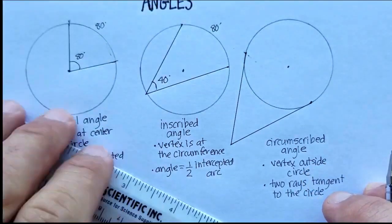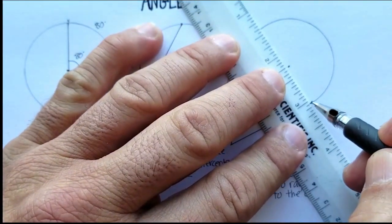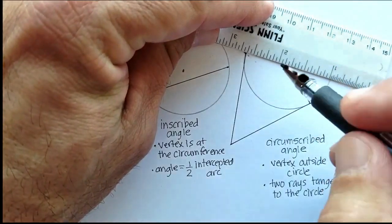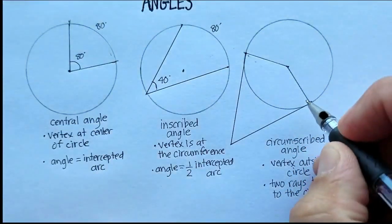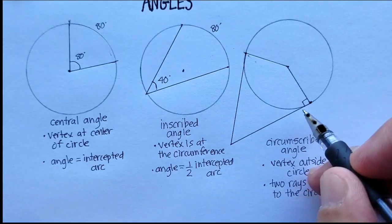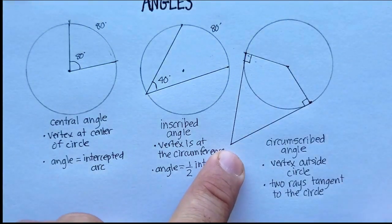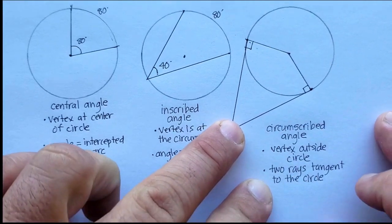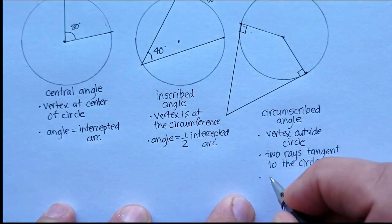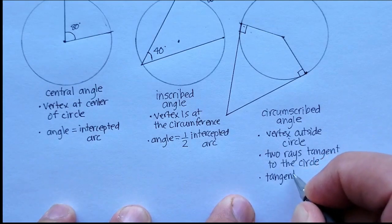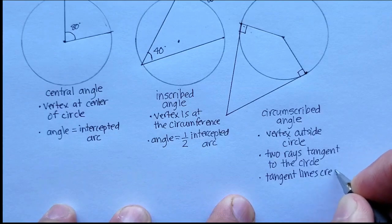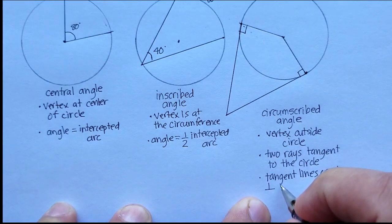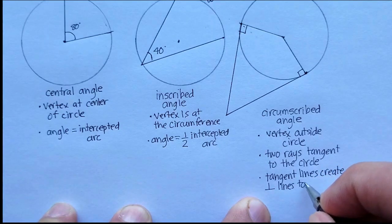The cool thing about tangent lines is that if you draw a line from where they intercept to the center of the circle, the angle formed is always 90 degrees. Tangent lines create perpendicular lines to the center of the circle.